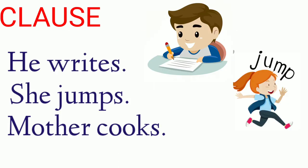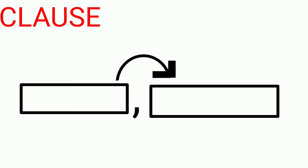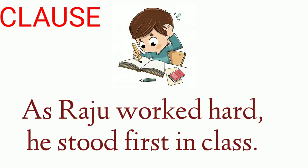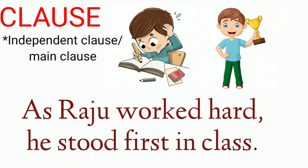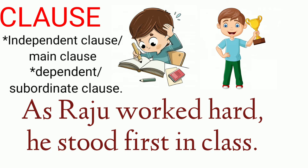Examples of independent clauses: 'He writes,' 'she sings,' 'mother cooks.' Sometimes a clause may take the support of another group of words. For example: 'As Raju worked hard, he stood first in the class.' Here, 'as Raju worked hard' is taking support of another group of words — 'he stood first in the class.' The clause 'he stood first in the class' gives a complete meaning, which is called an independent clause.